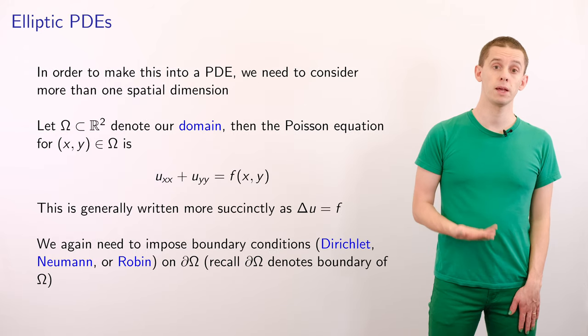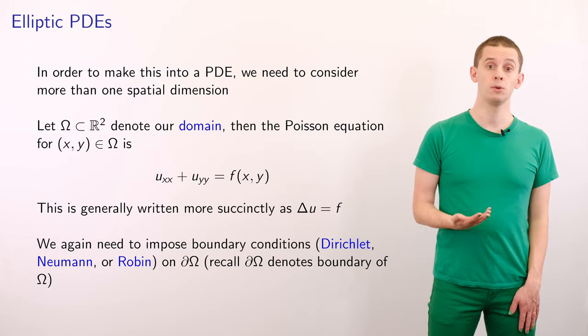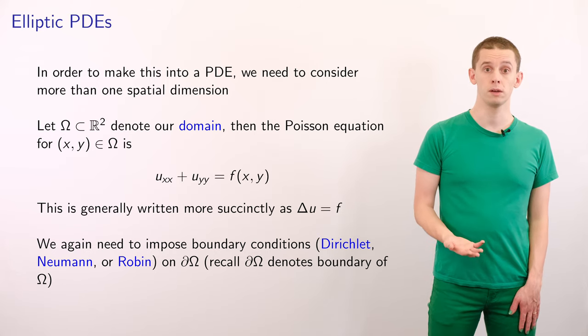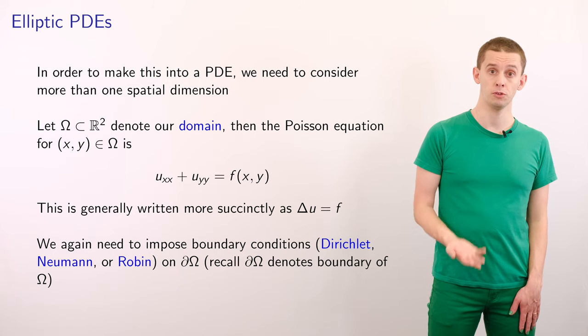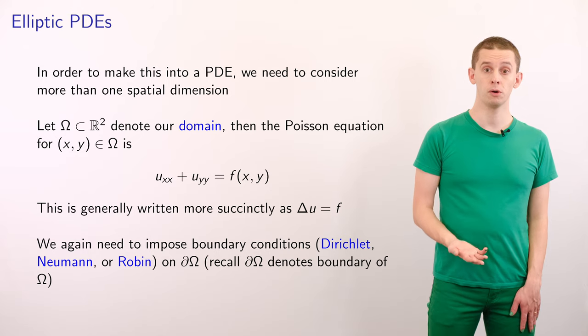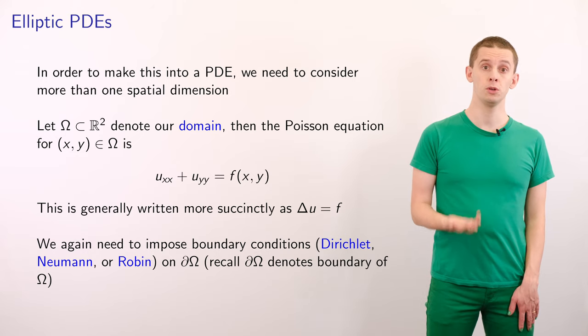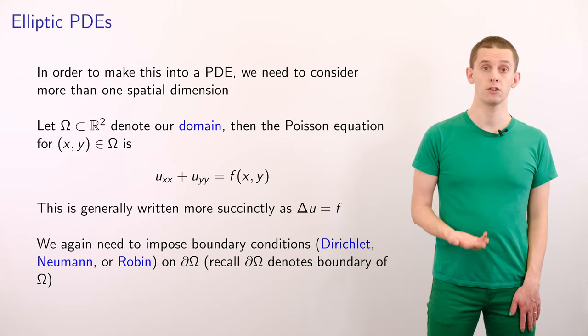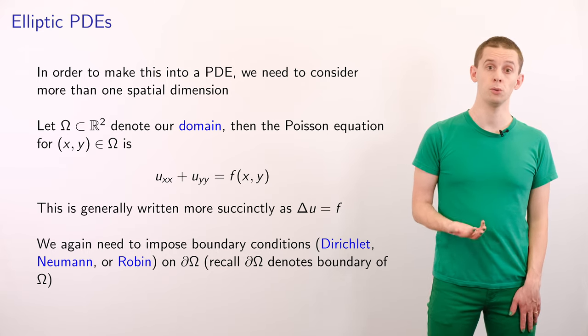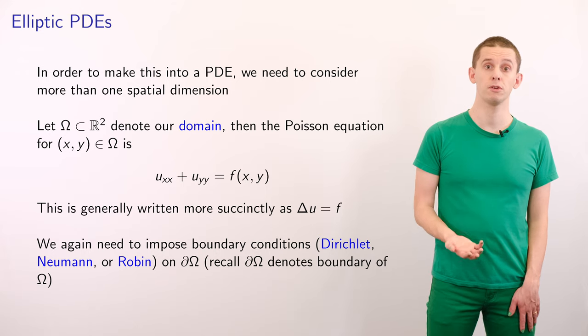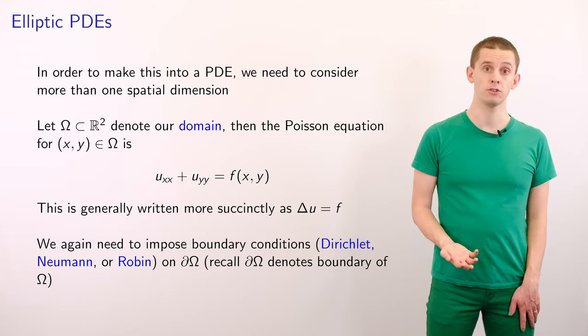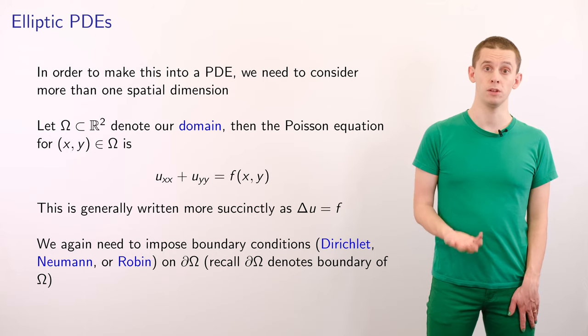So in order to make this into a PDE, we would need to consider more than one spatial dimension. So let's define omega to be a two-dimensional domain, and then the Poisson equation for our solution u of x and y in this domain will satisfy uxx plus uyy is equal to a function f of x and y. And we could write that more succinctly as just the Laplacian of u is equal to f.